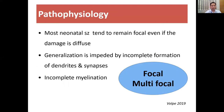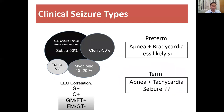Most neonatal seizures tend to remain focal even if the damage is diffuse. The reason is that myelination is very poor and incomplete, and there is poor formation of the dendrites and synapses. That is why most seizures in the neonatal stage are either focal or multifocal. If you look at the clinical seizure types, there could be four types: subtle, tonic, myoclonic, and clonic.